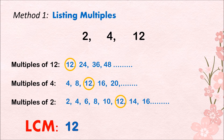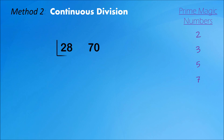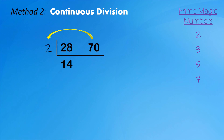Remember kids, the listing of multiples method is applicable only for smaller numbers. If you need to solve for a higher one, I suggest using continuous division. For example, you are given 28 and 70. Using our prime magic numbers — 2, 3, 5, and 7 — let's divide these two numbers. Since 28 and 70 are both even numbers, let's divide them by 2: 28 divided by 2 is 14, 70 divided by 2 is 35.